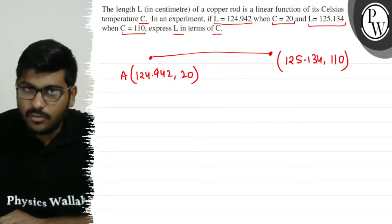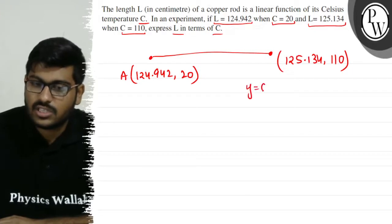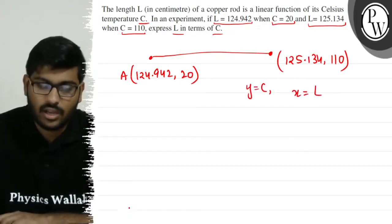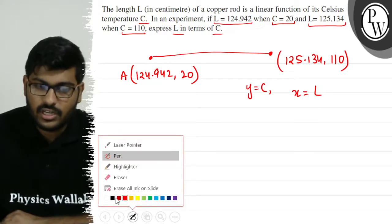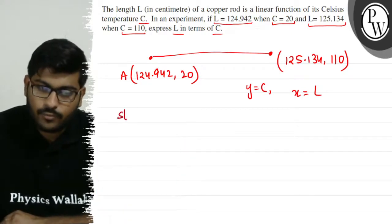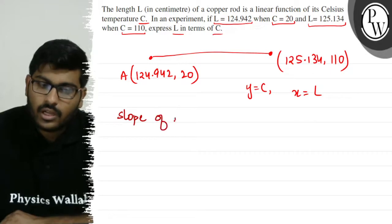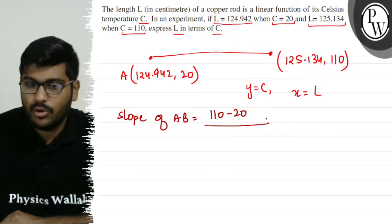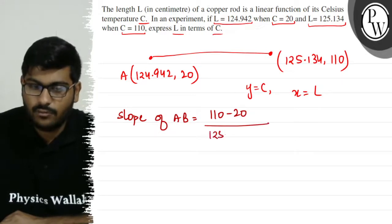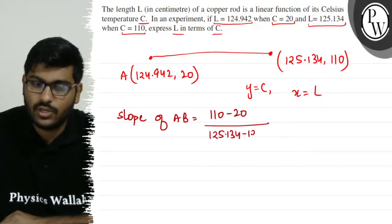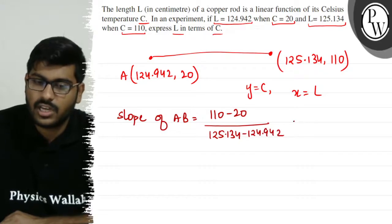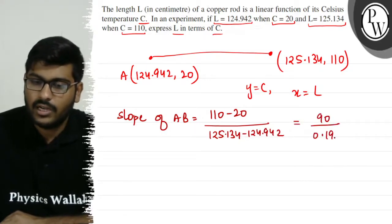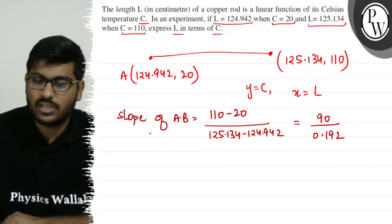The equation is written as a line. We calculate the slope using the two coordinates: the difference in c values is 110 minus 20, and the difference in l values is 125.134 minus 124.942. So the slope equals 90 divided by 0.192.